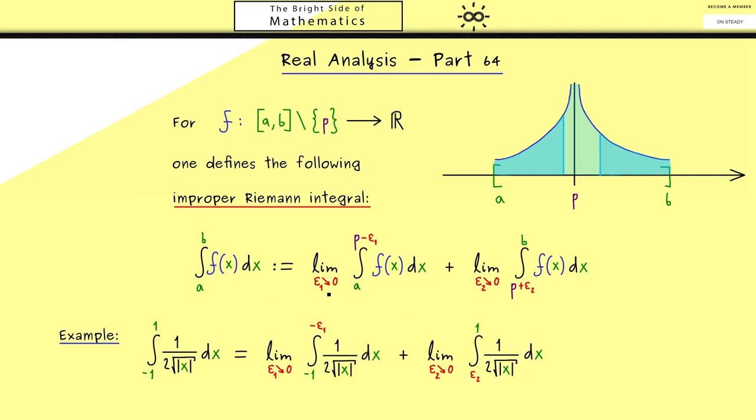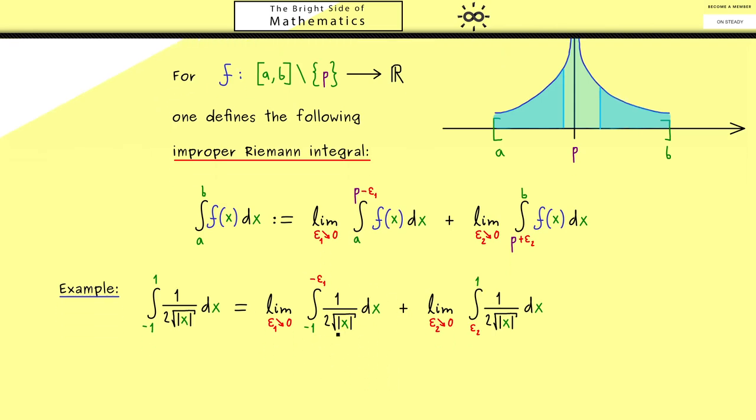Therefore, just let's copy the two limits here, but now it's easier because p is equal to 0. And now you should see because of this splitting here we can get rid of the absolute value.